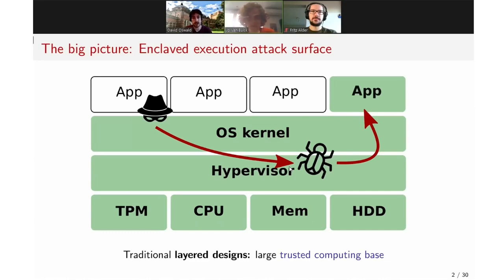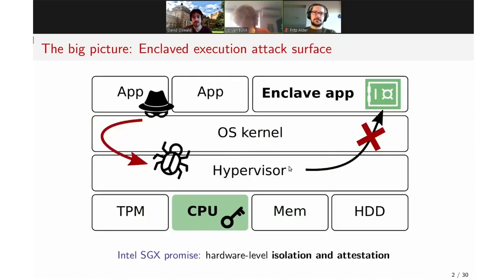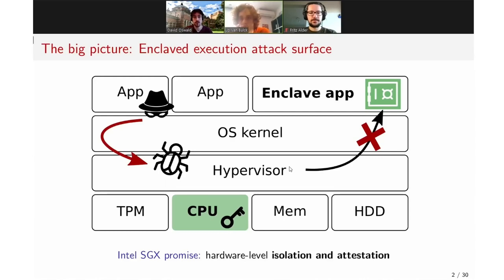The idea of enclave execution, as found in Intel SGX which is built into most recent Intel processors, is that you take most of the software stack between an actual application — here the enclave app — and the actual CPU, out of the TCB. Now you only trust the CPU and your own code, but not the OS anymore. SGX, for instance, promises to protect against an attacker who has achieved root in the operating system, and even against a malicious cloud provider. You can run your code in a trusted way with hardware-level isolation, attestation, and without trusting the administrator.